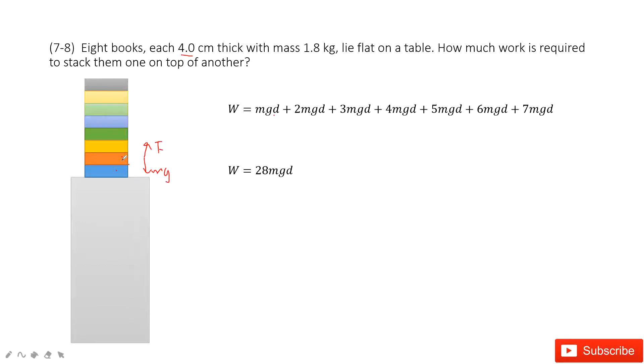Finally it lies on top of the first book. So this force equals mg. The distance it moved is d. So work is Fd cosine theta. Theta is zero, so it becomes Fd. This F magnitude equals mg, so it becomes mgd.